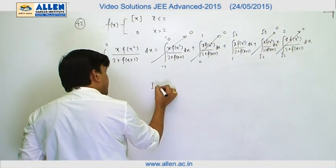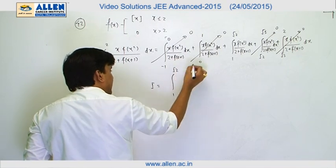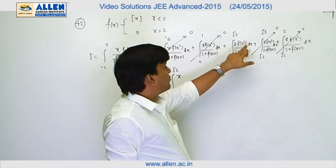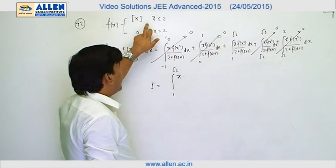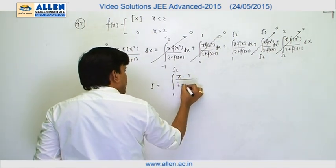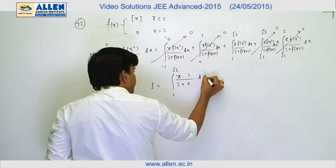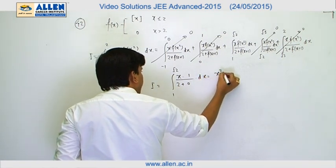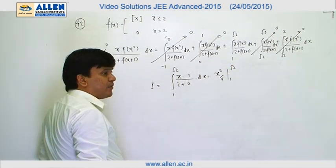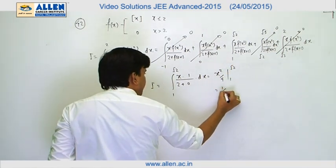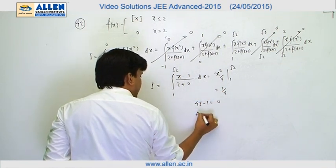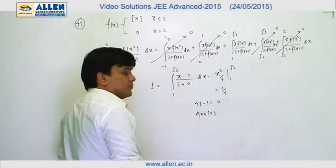For x varying between 1 and √2, x² varies between 1 and 2, so the argument of f varies between 1 and 2, giving f = 1/2. This reduces the integral to x²/4 evaluated from 1 to √2, which is 2/4 minus 1/4 = 1/4. Hence the value of 4I − 1 = 4·(1/4) − 1 = 0, and the answer is 0.